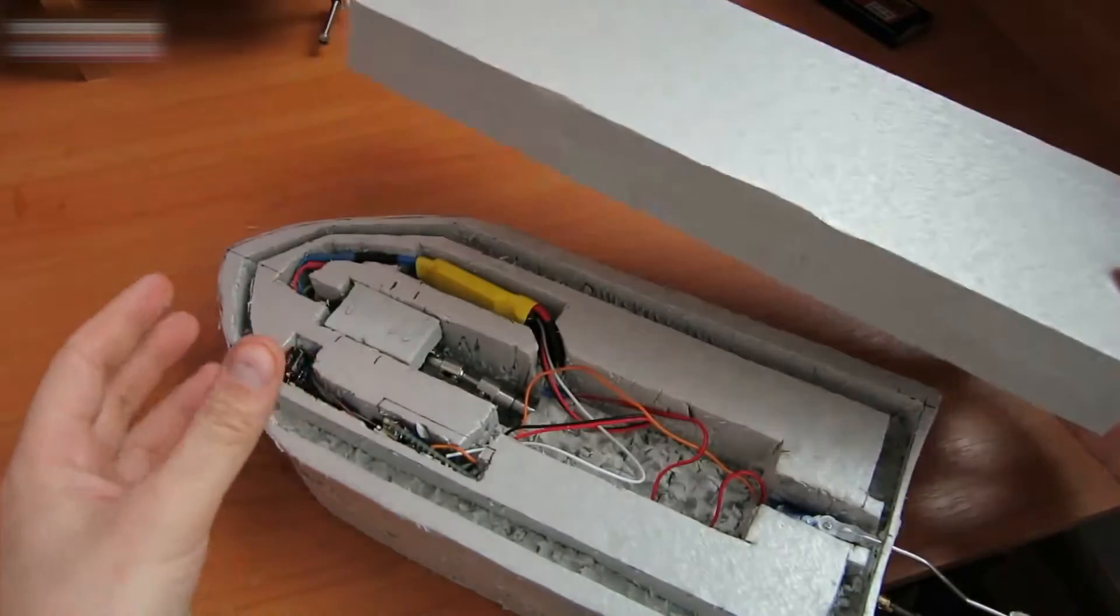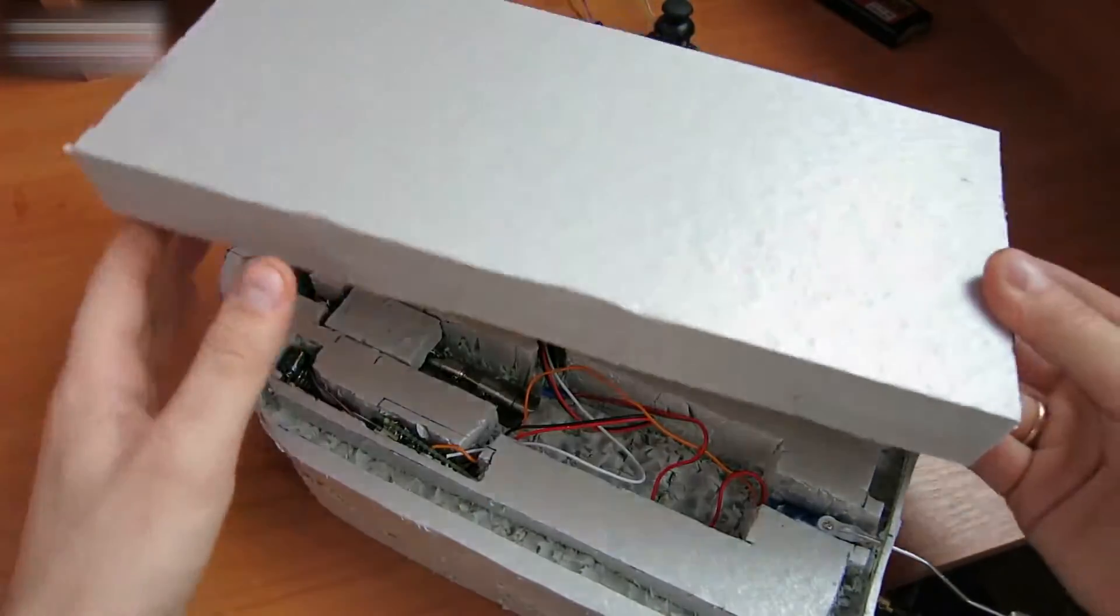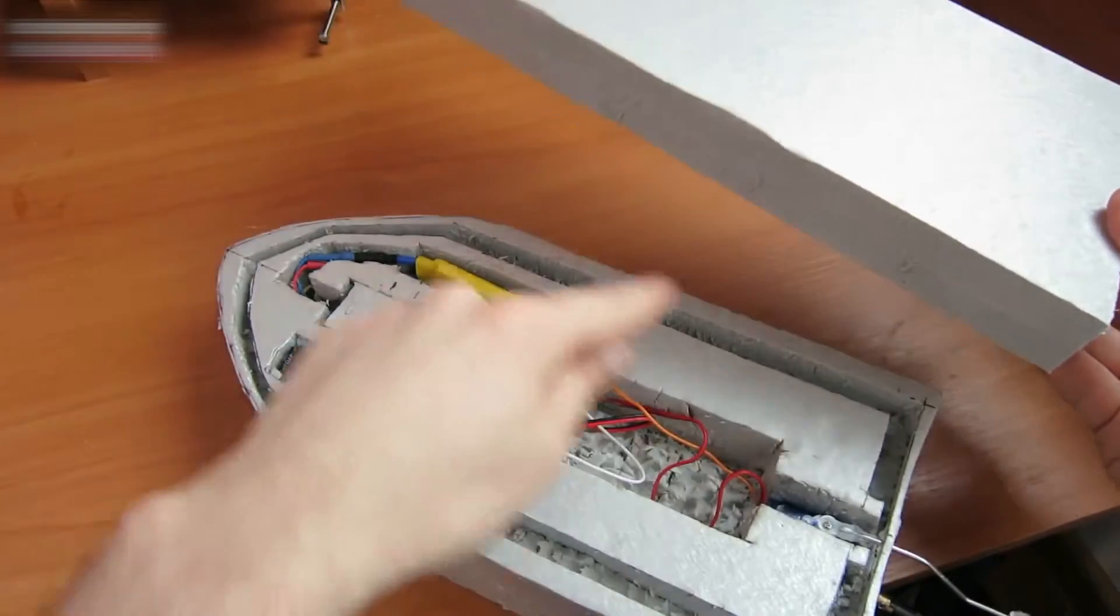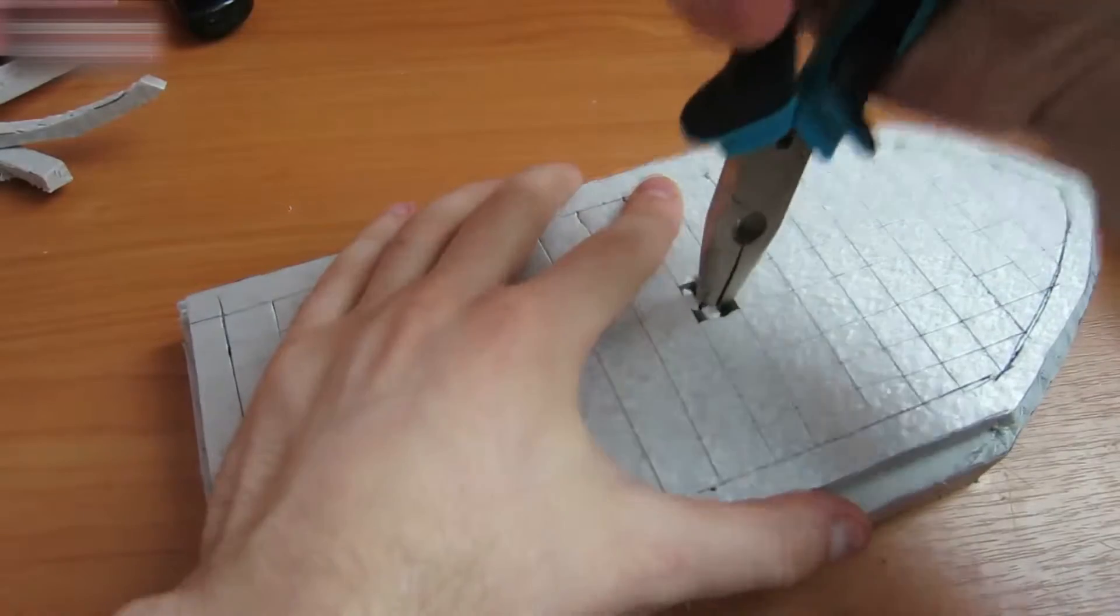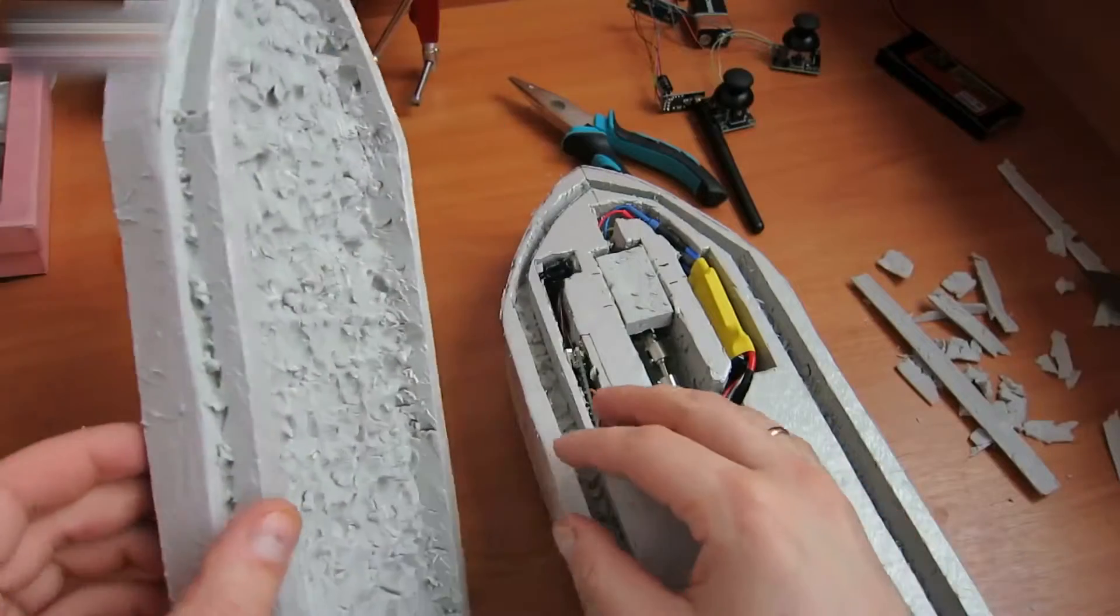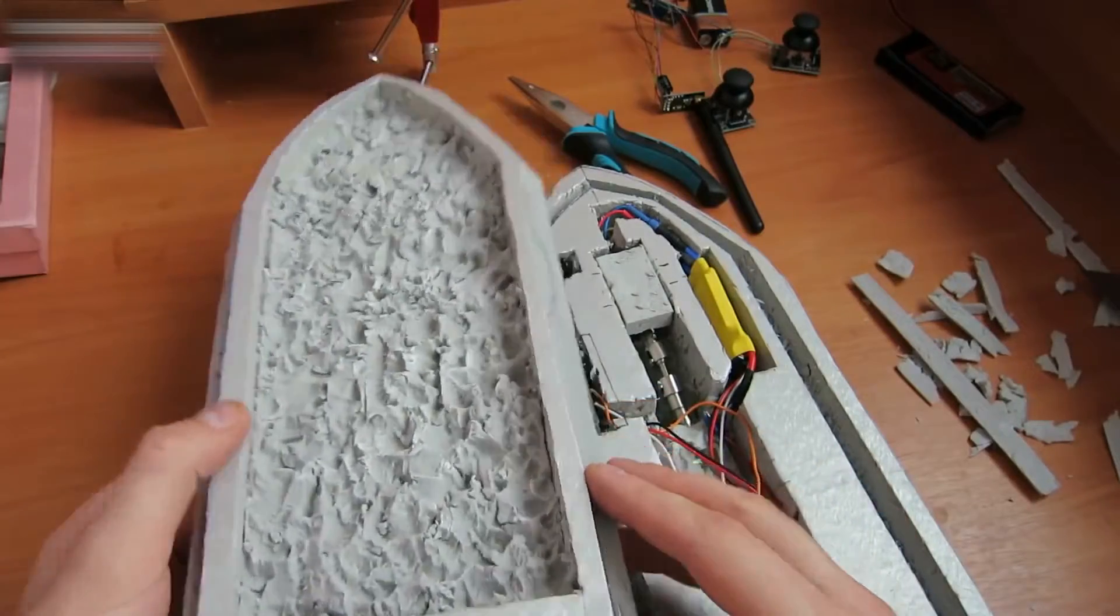Take another polystyrene piece and make a lid. It should fit into the slots. This is the lid with a ledge to fit the slots.